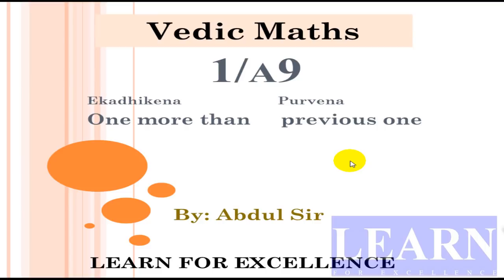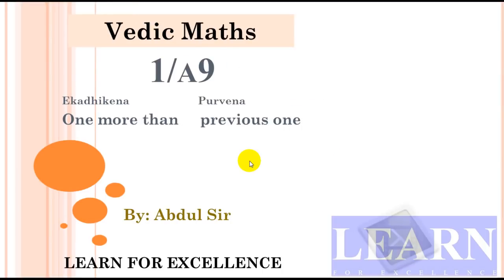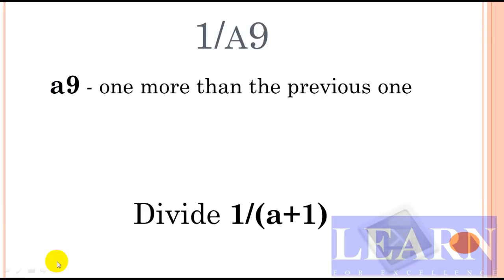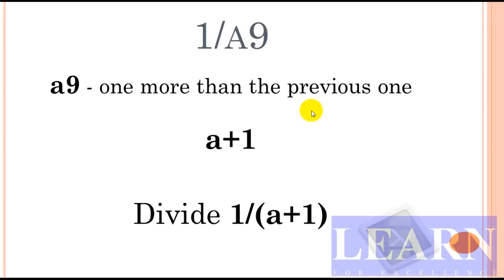Let's look at the example. Here I have taken the number 1 divided by a9, where 'a' is any natural number — it may be 1, 2, 3, and so on. For this a9, one more than the previous one is nothing but a+1. So instead of dividing 1 by a9, we are going to divide 1 by a+1.